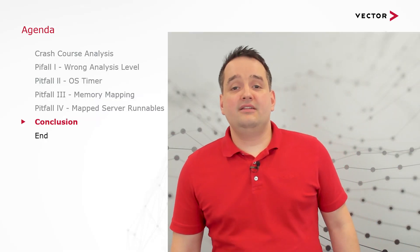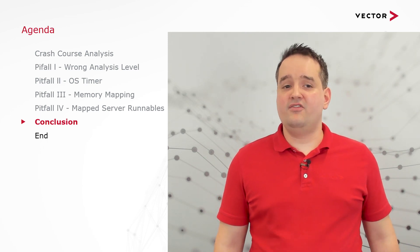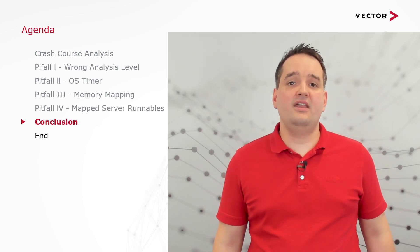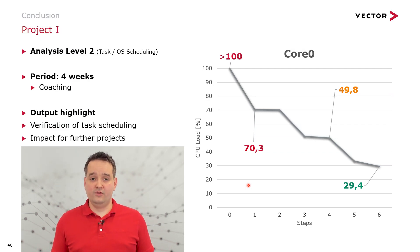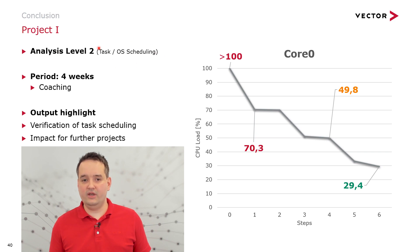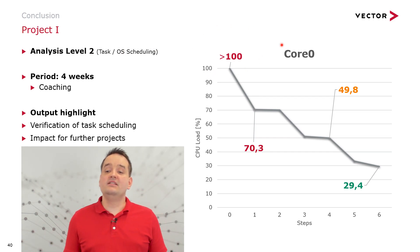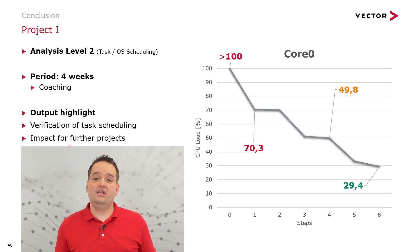With these four pitfalls in mind, let me present three customer projects as a conclusion to show what can be achieved by identifying and avoiding such pitfalls. The first was a coaching engagement with Vector over four weeks. We applied level 2 analysis, observing task and OS scheduling, and were able to reduce the initial CPU load from over 100% down to 29%. This also verified task scheduling correctness and has impact for future projects when transferring software designs.